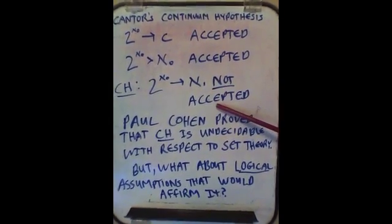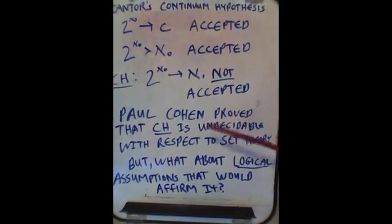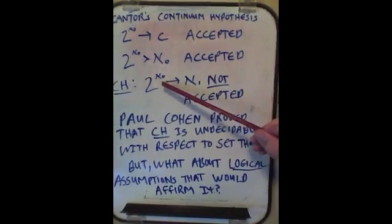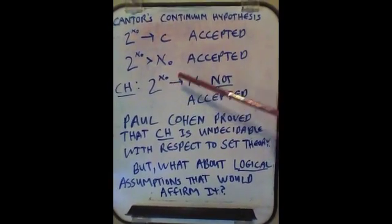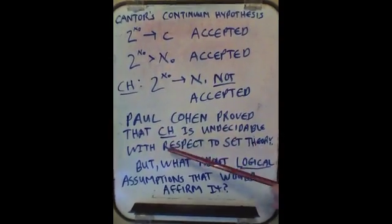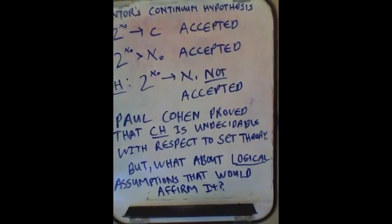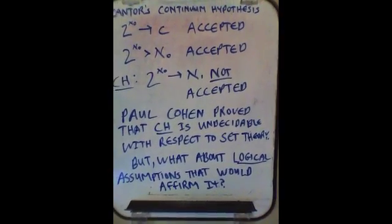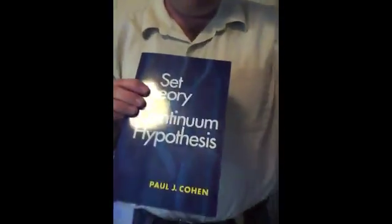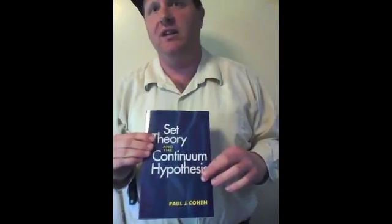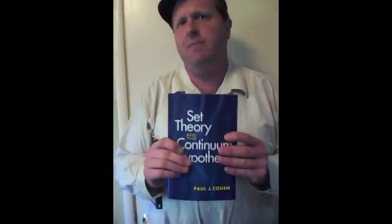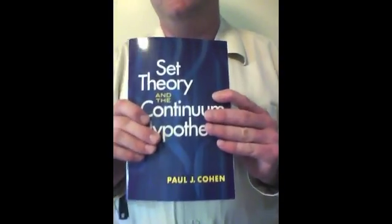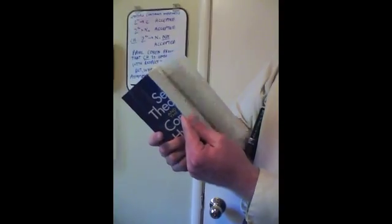What we have is: between aleph-null and C there are no possible levels of countability — we can exclude those. However, this has not been accepted among mathematicians. Paul Cohen proved that the Continuum Hypothesis — the belief that there are no levels of infinity between aleph-null and C, or between the infinity of the natural numbers and the infinity of all real numbers — is undecidable with respect to set theory. This is laid out in Paul Cohen's book 'Set Theory and the Continuum Hypothesis,' which is rather difficult reading but is accepted among mathematicians.